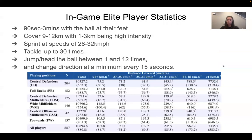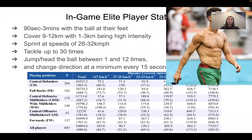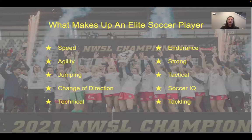Soccer is a unique sport in the demands it requires from its athletes. You need to be fast but able to run long distances, explosive but for 90 minutes, agile but also able to control the ball at your feet. You need muscle mass to protect from contact but being on the leaner side is beneficial. It is one of the few sports that requires all aspects of being an athlete. The elite players are fast, agile, jump high, cut on a dime, technically skilled, can cover 9 to 12 kilometers in 90 minutes, strong, mentally sharp, and can put their body into a tackle.